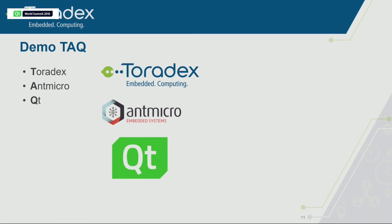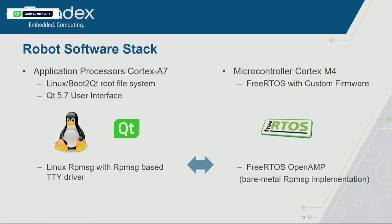Just a bit more about how it really works: we have Linux with a boot-to-Qt stack using Qt 5.7 for the user interface. We use a software framework called RPMsg to communicate between the two cores — on the Linux side it looks like a serial TTY driver, making it very easy to talk to the microcontroller. On the microcontroller side we run a small real-time operating system called FreeRTOS and use the OpenAMP implementation for RPMsg. They communicate together, and I also have a game controller so it can drive around.